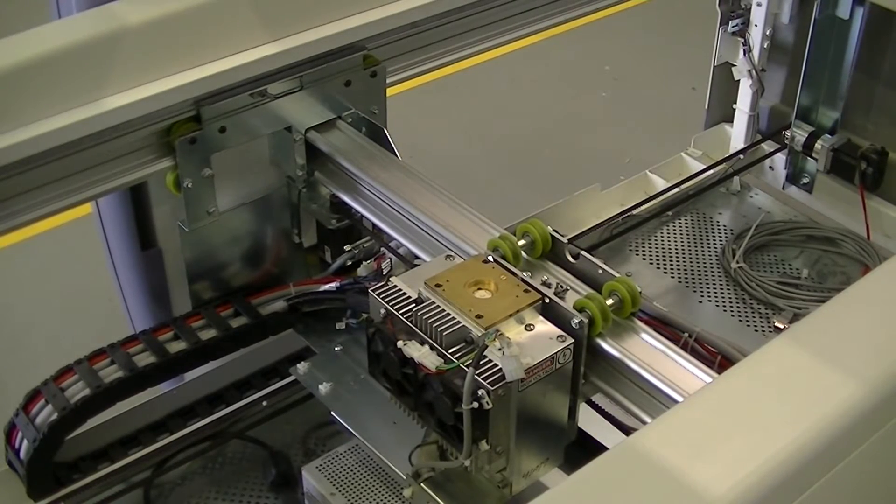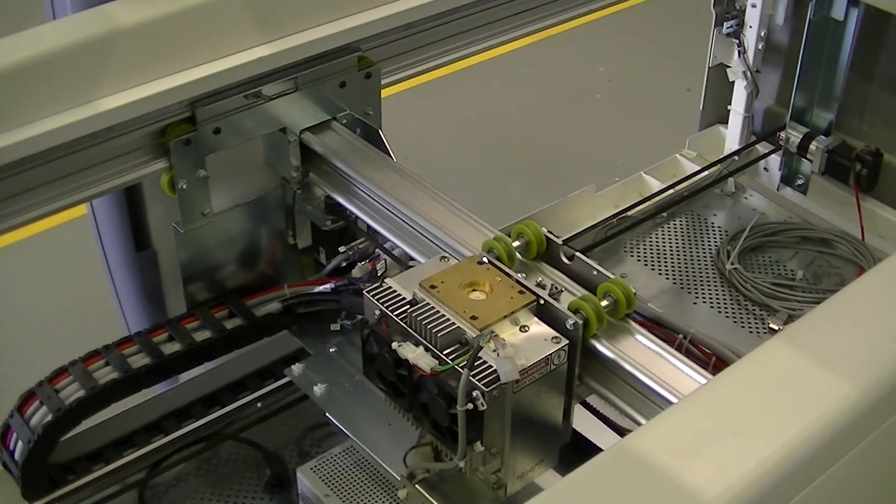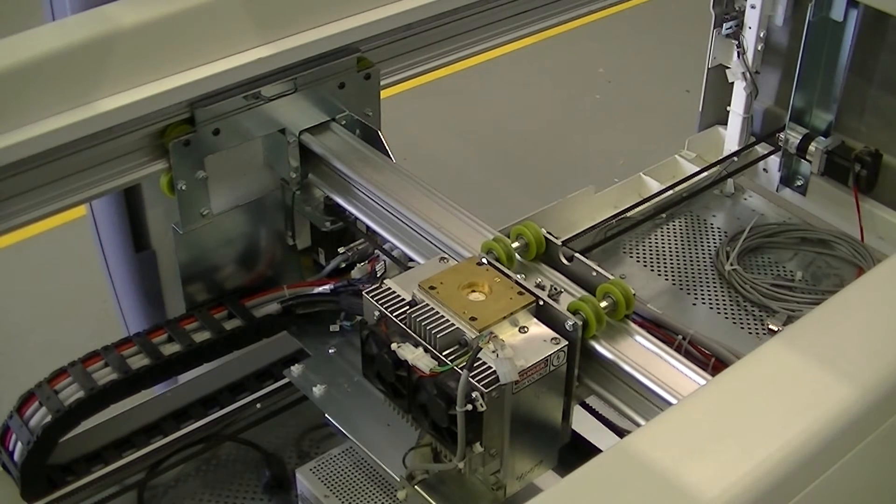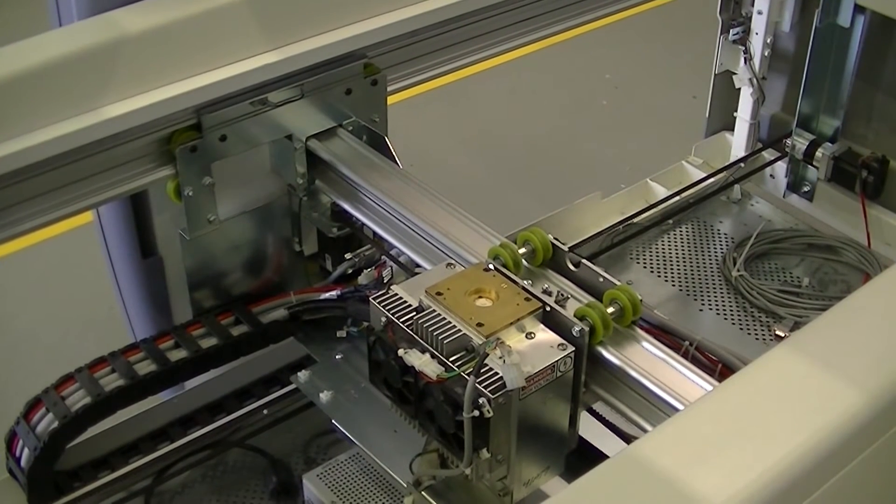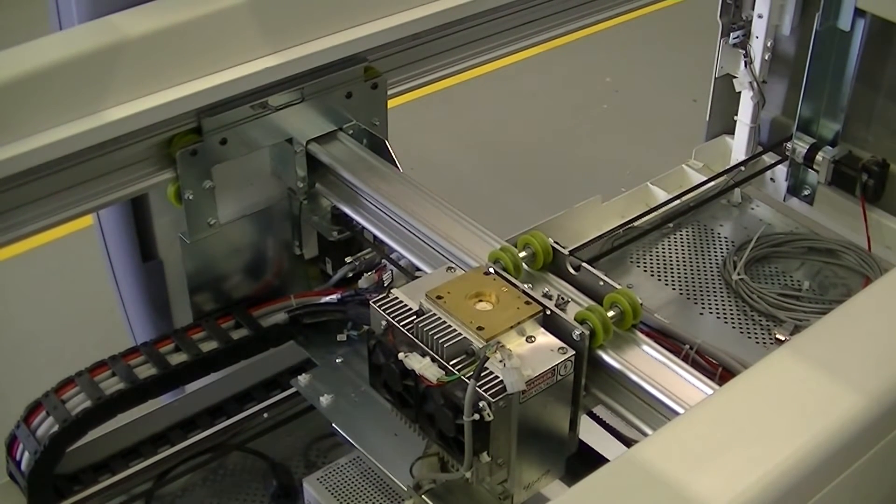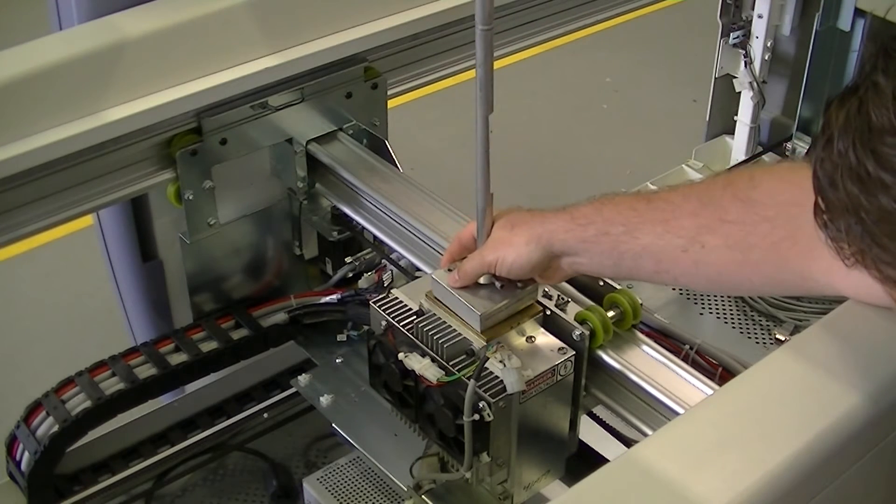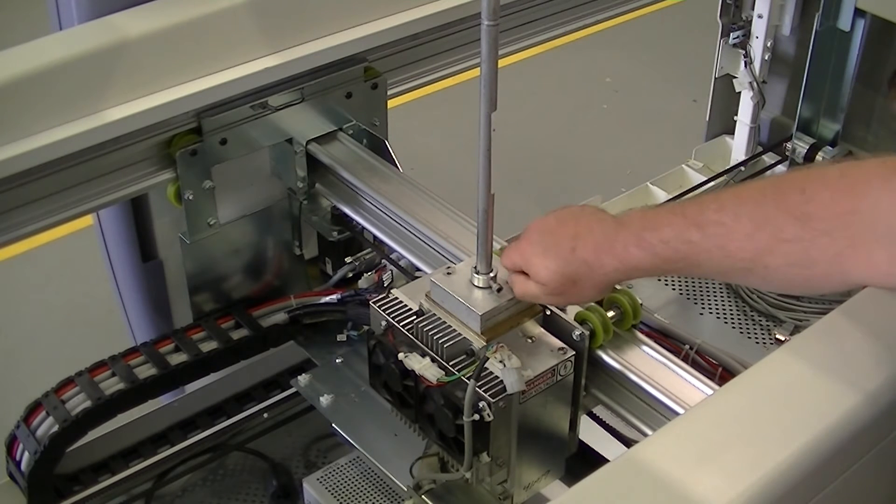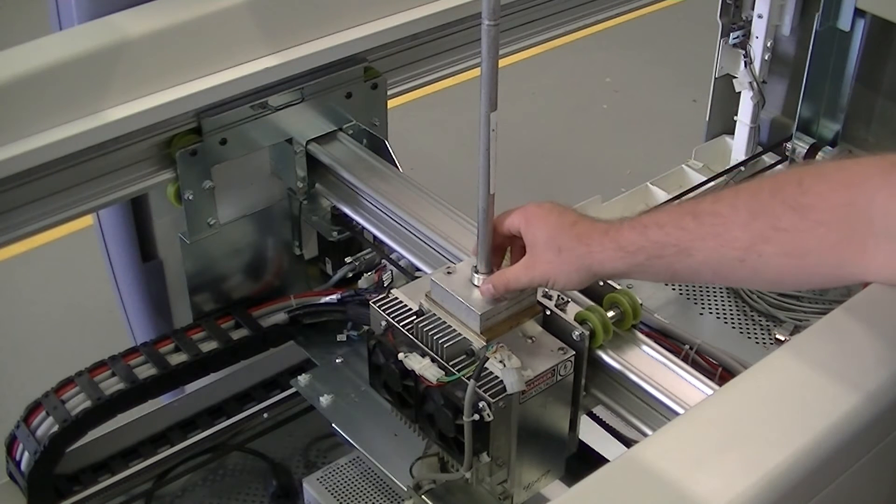Before we can do any calibration, the tube head must be aligned. For this procedure, you'll need an alignment extension rod. Secure the alignment extension rod to the top of the tube head, lining up the holes and securing with screws. This will allow us to make sure the tube head is aligned.